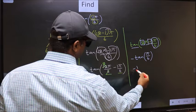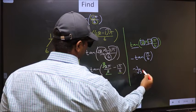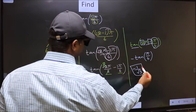So, negative tan(π/6) is 1 by root 3. This is our answer.